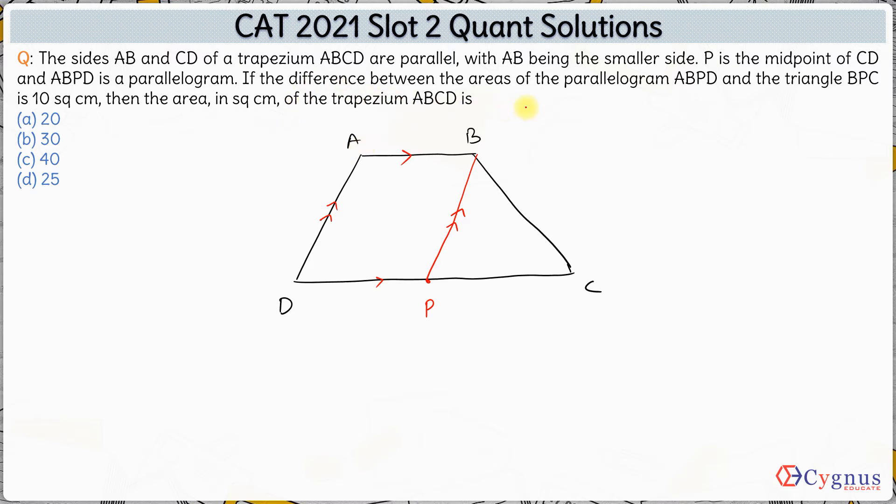If the difference between the areas of parallelogram ABPD and triangle BPC, this triangle, this difference is 10, then the area in square centimeters of the trapezium ABCD is how much?